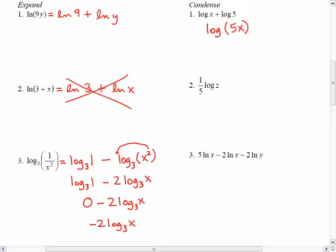In the second one, I have a number in front of the log, so that will become a power. So it will be log of z to the 1/5th. Remember, the 1/5th power really means the 5th root. So that would become the log of the 5th root of z.